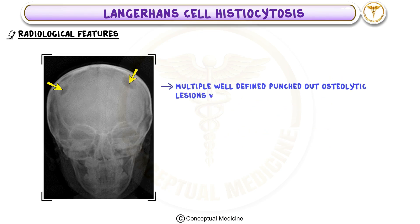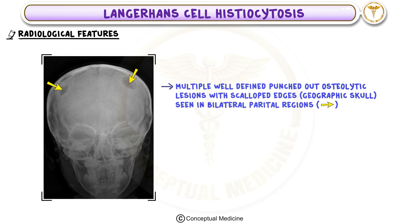Multiple well-defined punched-out osteolytic lesions with scalloped edges — the so-called geographic skull — are seen in bilateral parietal regions. The lesions have a characteristic beveled edge.